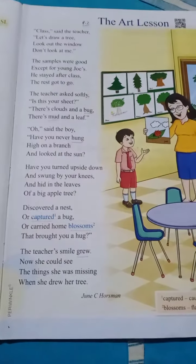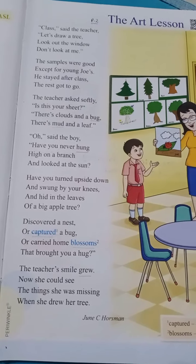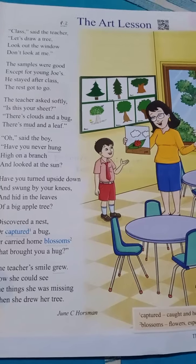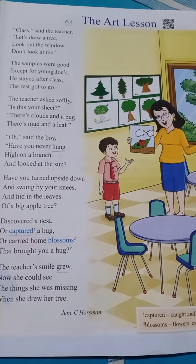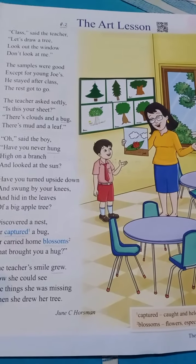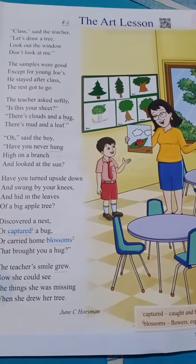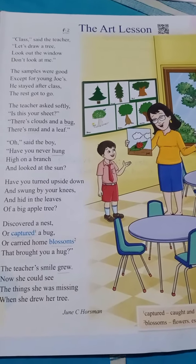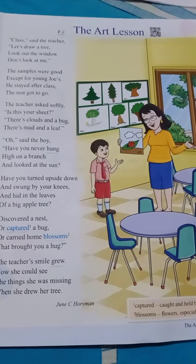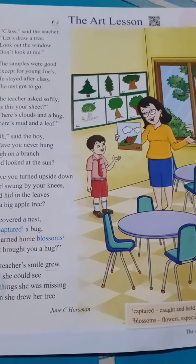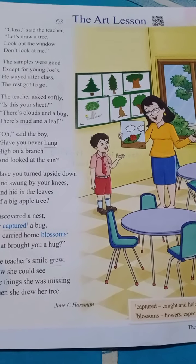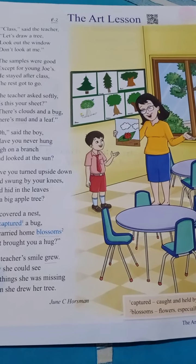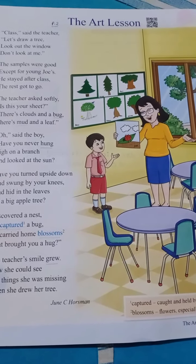Now we will move towards the explanation of the poem. Poem 2: The Art Lesson, written by June C. Horstman. Art means drawing. This poem is related to a young boy named Joe. Here in the picture, you can see a boy — his name is Joe. This poem is related to Joe's drawing, or art.